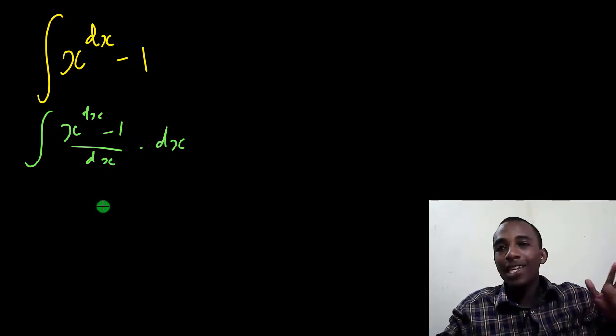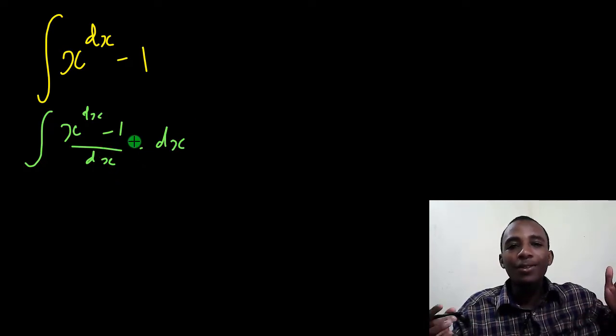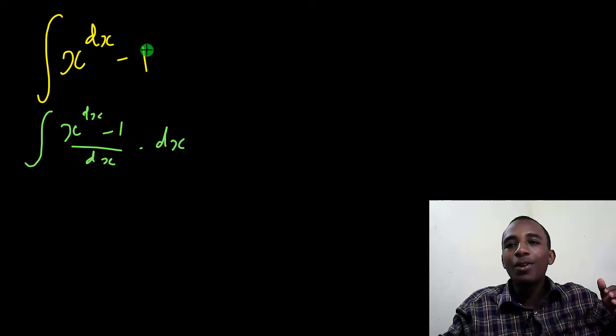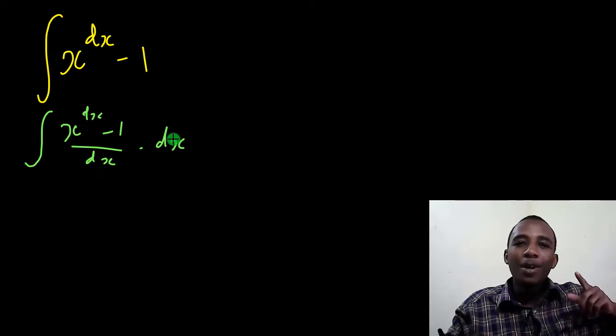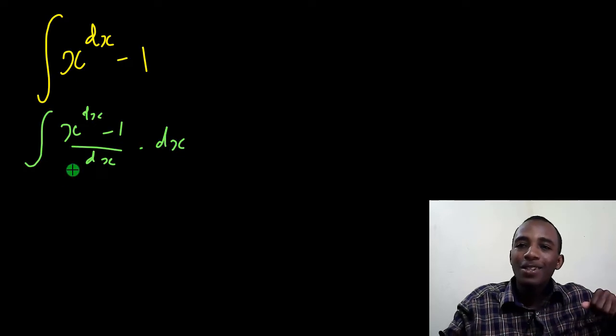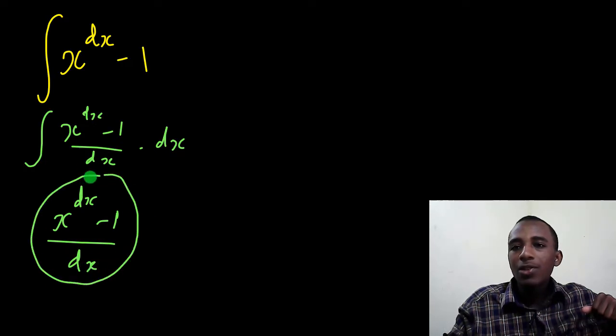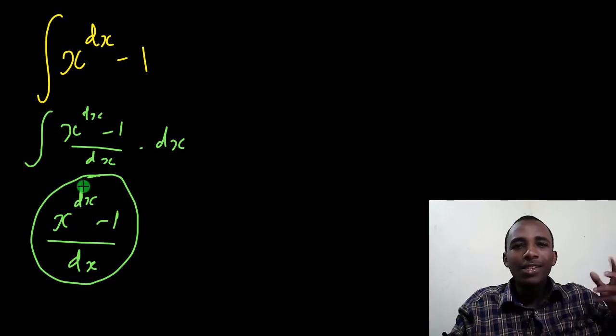I'm going to write this as the integral of x to power dx minus 1 divided by dx times dx. Now, this does not change the question because this dx can cancel out and we'll go back to the original question. But by writing it this way, it gives me better insight on what I'm actually dealing with.